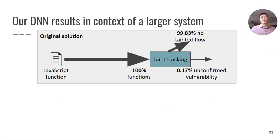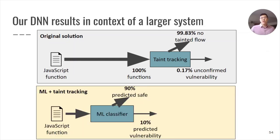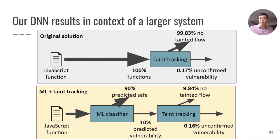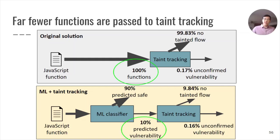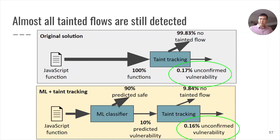How do these numbers relate in context of the larger system at hand? Remember that in the original solution, all functions are passed to taint tracking, and a very small percentage, only 0.17%, turn out to be unconfirmed vulnerabilities or tainted flows. In our proposed solution, we use a classifier that removes from consideration a large percentage of total functions and passes the rest to taint tracking, which then finds tainted flows to find unconfirmed vulnerabilities. Far fewer functions are passed to taint tracking when machine learning is used to remove them from consideration, which greatly reduces the overhead. Because our machine learning classifier is tuned for high recall, we're still able to capture most tainted flows — only 0.01% of flows were lost when using our machine learning classifier.